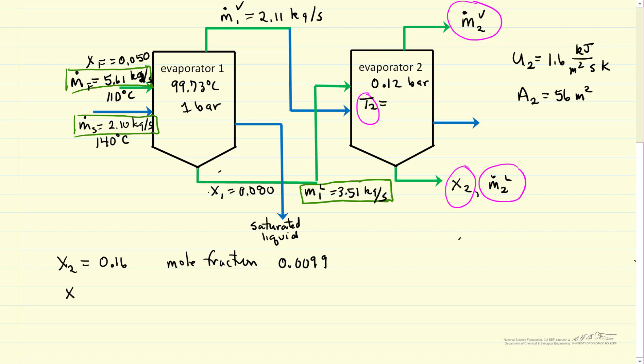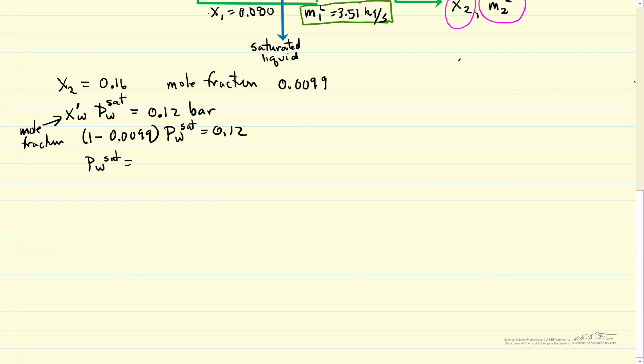So then, if I substitute in for water, this is mole fraction. Reasonable approximation, Raoult's law, when it's a low mole fraction, down to saturation pressure that's going to be the pressure in evaporator two. So one minus 0.0099, everything that's not sucrose is water. Saturation pressure is what we're going to determine. So the saturation pressure then is 0.1212 bar.